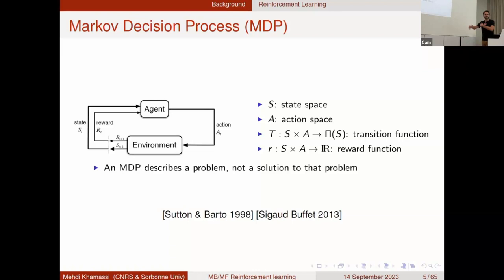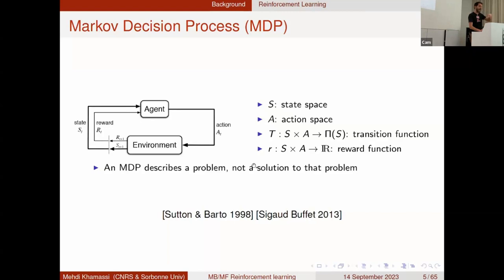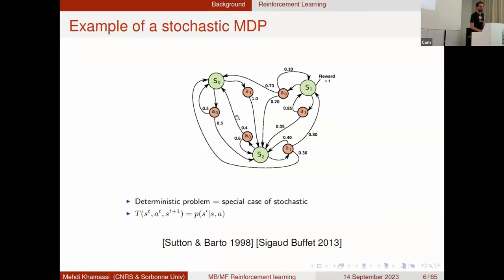The reward function tells you which state-action couples are associated with reward. Together, these MDP functions describe the problem, not the solution. For example, in a three-state system S0, S1, S2 with two actions A0 and A1, from S0 with action A0 you have a 50% chance of staying in the same state and 50% of transitioning to S2. You can represent probabilistic stochastic problems as well as deterministic ones.